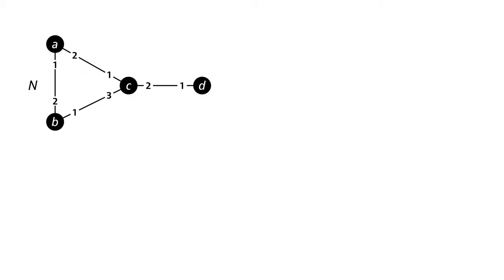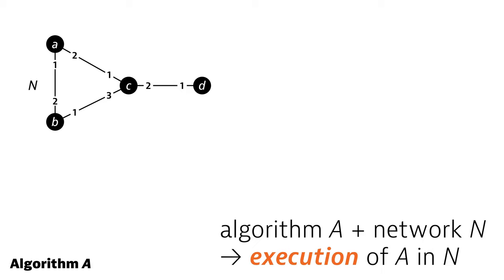Let's look at some port-numbered network N, like this one here, and imagine you've got some deterministic distributed algorithm A. It doesn't matter what the algorithm does, or what problems it solves. It's enough that it's a well-defined algorithm in our formalism. There's an init function, send function, and receive function. Now, once you fix algorithm A and network N, you have also uniquely defined the execution of the algorithm. You can just simulate the algorithm here and see what messages nodes send in each round, and how they update their states. You can find out, for example, what's the state of node A after round 5.